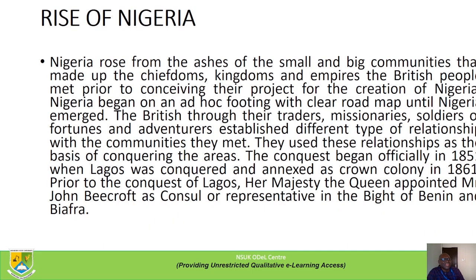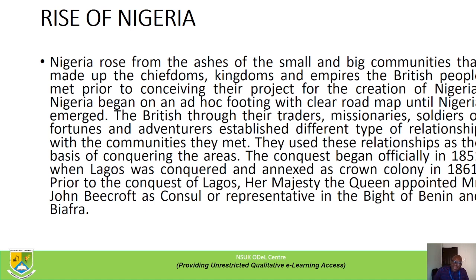The rise of Nigeria. Nigeria rose from the ashes of small and big communities that made up the chiefdoms, the kingdoms, and the empires the British people met prior to conceiving their project for the creation of Nigeria. Nigeria began on an ad hoc footing with clear road maps until Nigeria emerged. The British — through their traders, missionaries, soldiers of fortune and adventurers — established different types of relationships with the communities they met, and used these relationships as the basis of conquering the areas. The conquest began officially in 1851, when Lagos was conquered and annexed as a crown colony in 1861. Prior to the conquest of Lagos, Her Majesty the Queen appointed Mr. John Bertroth as consul or representative in the Bight of Benin and Biafra.